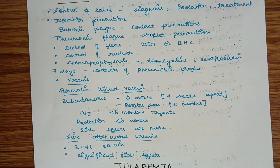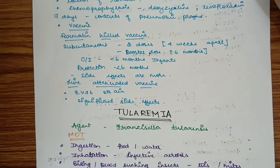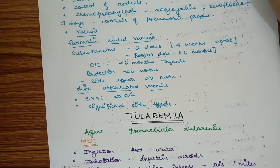Live attenuated vaccine has EV76 strain and has significant side effects. Generally vaccine is not used except in cases where plague is seen more commonly.